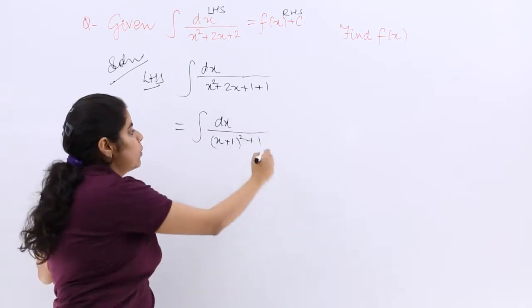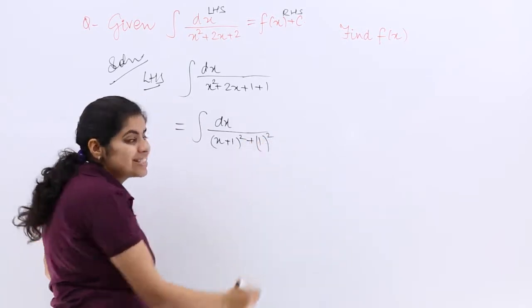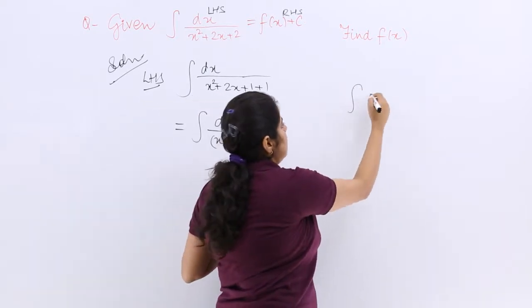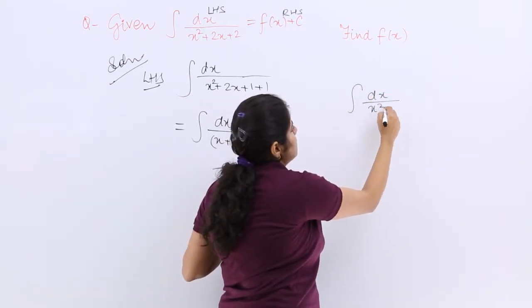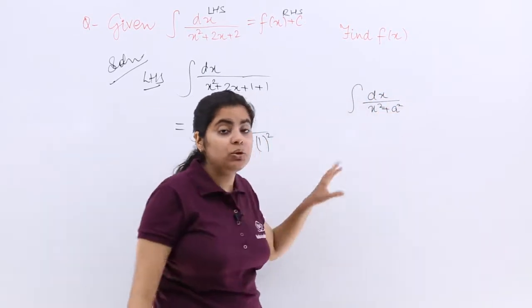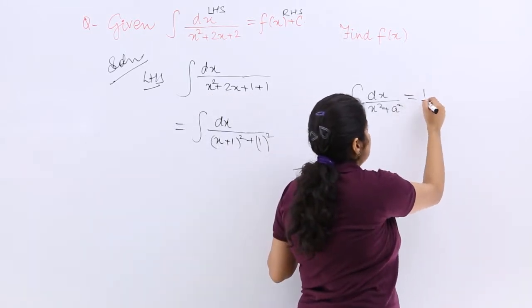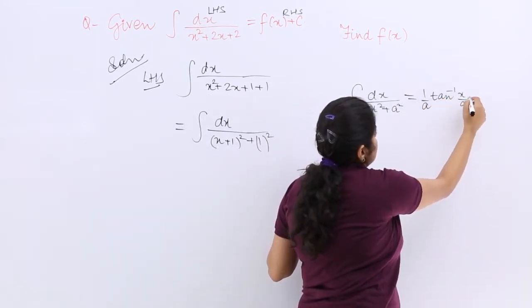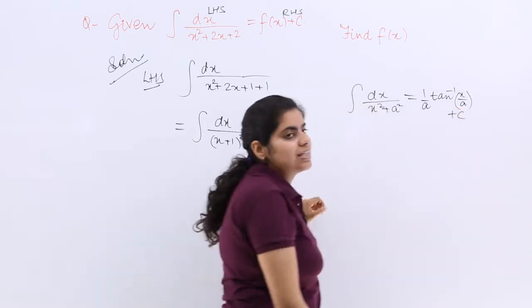Now see, does this question not seem like dx upon x square plus a square? And you know what is the value of the integral? 1 by a tan inverse x by a plus c.